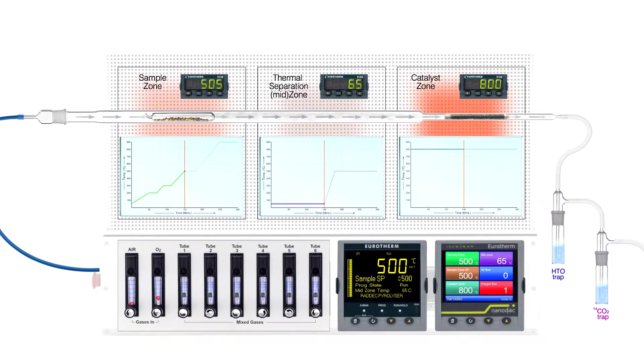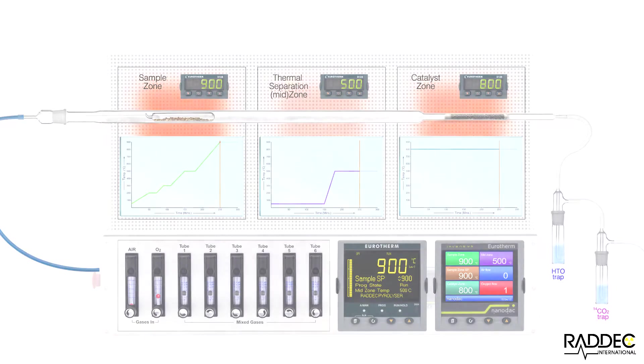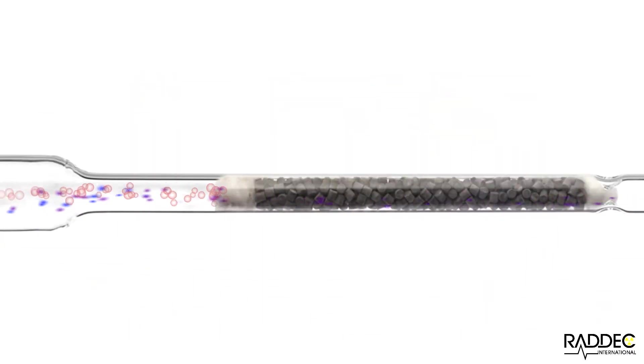In most cases, when the sample zone has reached 500 degrees Celsius, the airflow is automatically changed to oxygen to ensure complete oxidation of the sample. The mid zone is also powered to ensure rapid heating to 500 degrees Celsius to burn off any condensed organics. The sample zone is now rapidly heated to 900 degrees Celsius to ensure the effective opening out of refractory materials. By 900 degrees Celsius, all tritium and carbon-14 will now have been liberated.